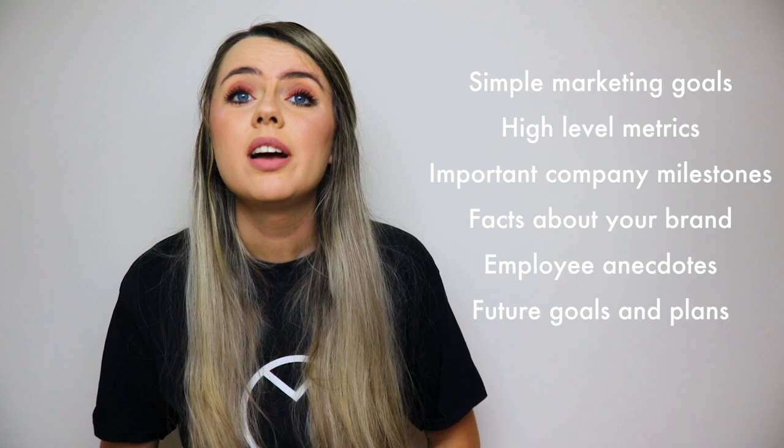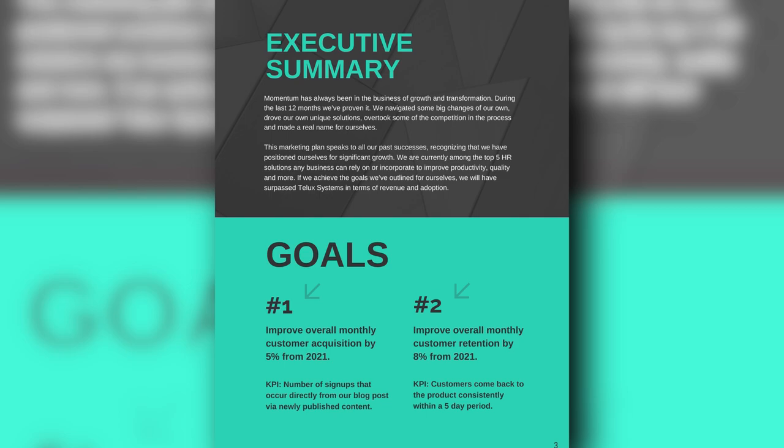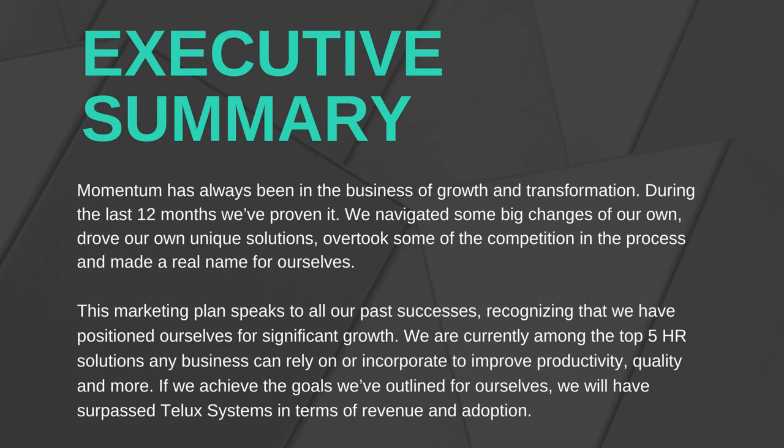Take a look at the Executive Summary in the marketing plan example — it's only two paragraphs long, short but effective. It tells readers about the company's growth and how they are about to overtake one of their competitors, but with no mention of specific metrics or figures. An effective Executive Summary should have enough information to pique the reader's interest, but not bog them down with specifics just yet.